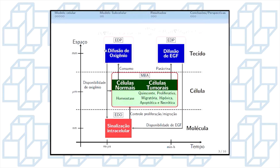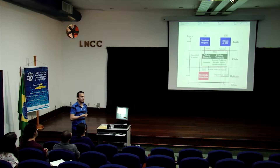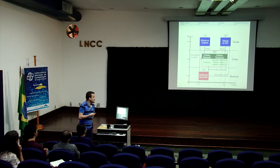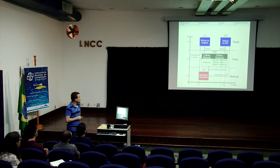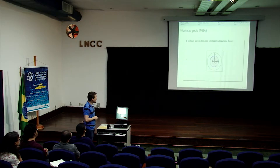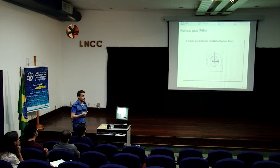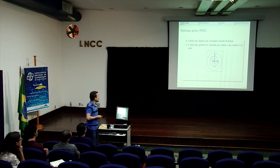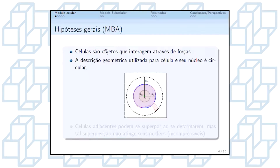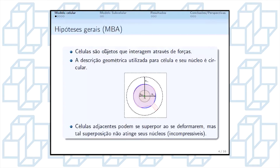É comum para modelos baseados em agentes estabelecer algumas regras para definir a dinâmica da evolução temporal. As principais regras utilizadas foram que as células são objetos físicos que interagem entre si através de forças. A descrição da célula e do seu núcleo é circular, por simplicidade. As células adjacentes podem se sobrepor ou se deformar, mas os núcleos não se sobrepõem, pois são considerados incompressíveis.